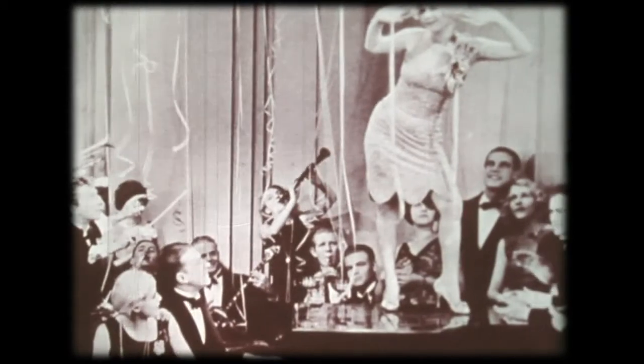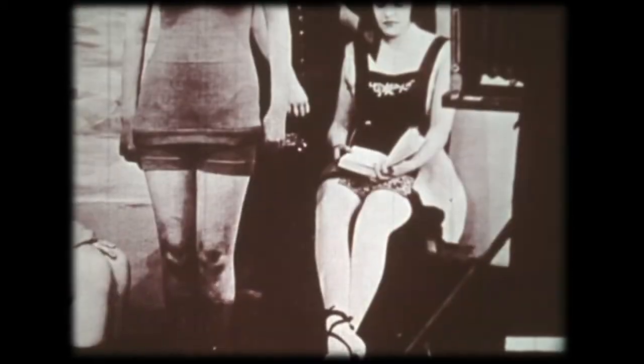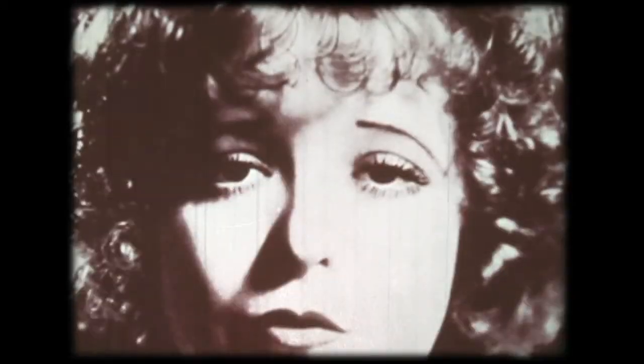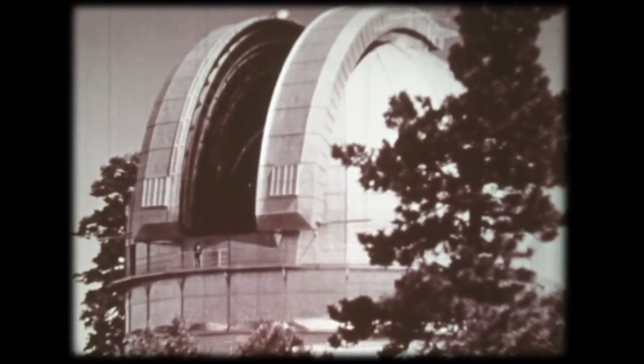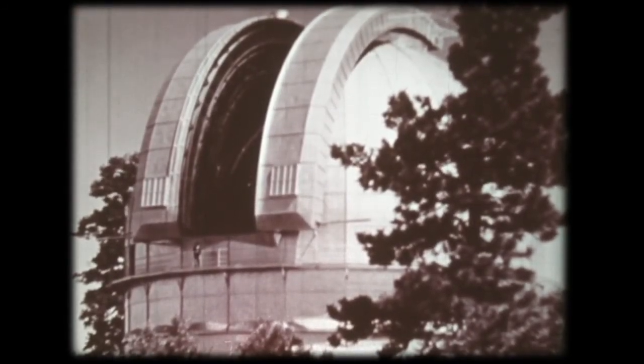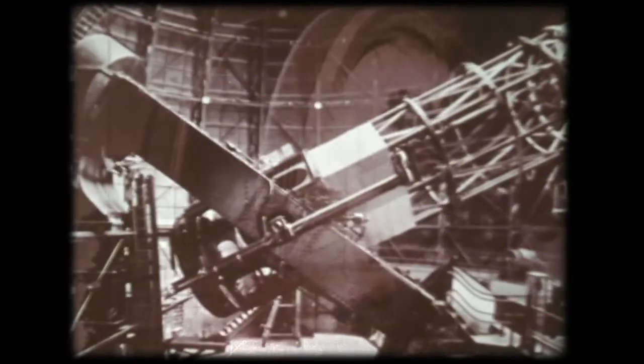Like many important scientific discoveries, the answer had to wait for the right equipment and the right man. The year was 1924, and the right equipment was the new, powerful 100-inch telescope at Mount Wilson Observatory. And the man? The man was Edwin Hubble.